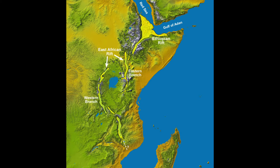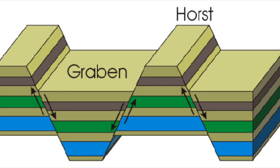Rifting is the process by which the continental lithosphere stretches and breaks. The continental rift is the belt or zone of the continental lithosphere where the rifting is occurring. There are certain geologic features associated with rifting such as faults, half-grabens, volcanism, and earthquakes.